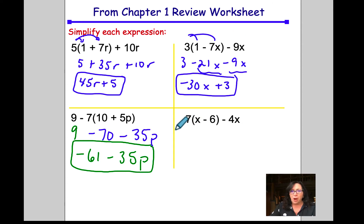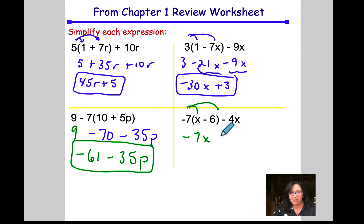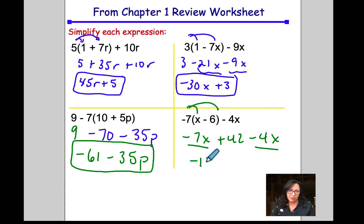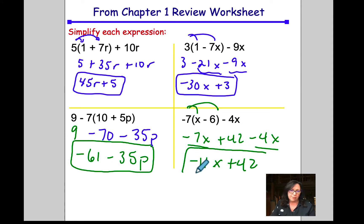For this problem, we're going to distribute as well. This is going to be negative 7x plus 42 minus 4x. I have to remember to combine my x terms. I've got negative 7 and negative 4, which is negative 11x. Then add 42, and that would be my answer.